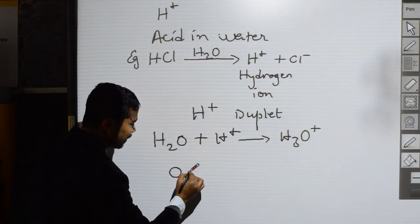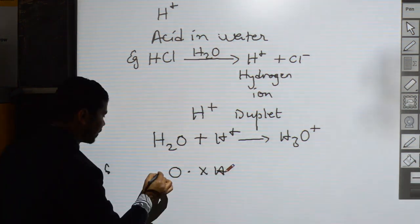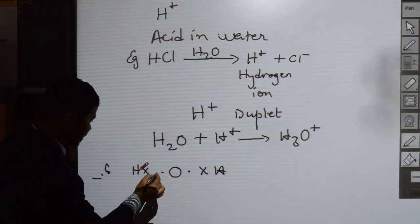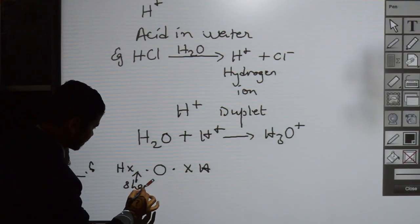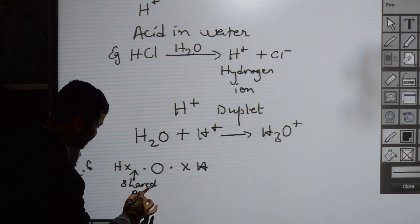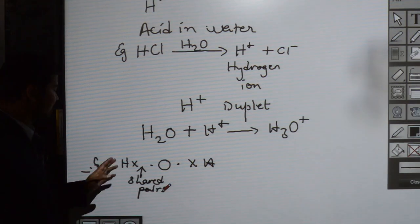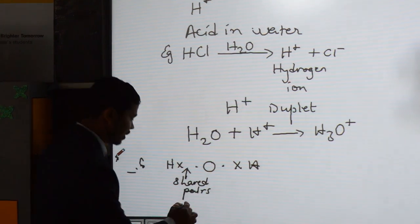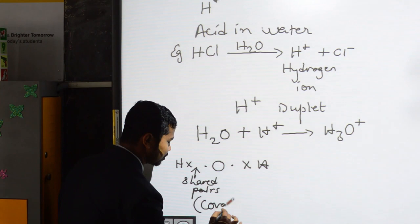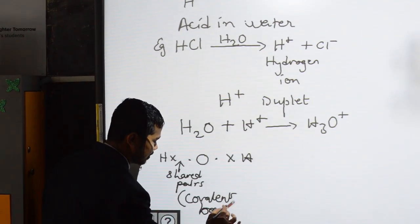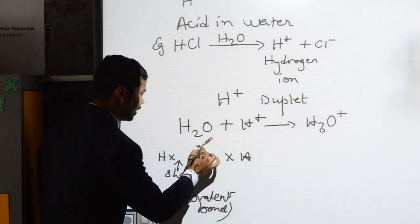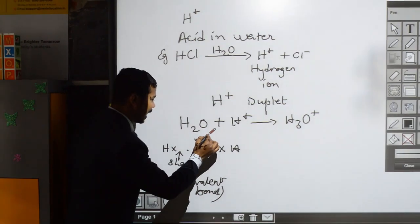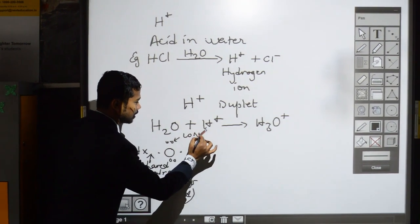Let's see in detail. Water is formed by two shared pairs of electrons — these are the shared pairs because they are mutually shared between hydrogen and oxygen, with hydrogen giving one electron for each bond. These are covalent bonds. Oxygen has two pairs of electrons left over, and these two pairs are lone pairs.